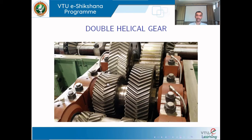A double helical gear has left-hand and right-hand teeth both inclined to the gear axis. It is used to overcome the disadvantage of the single helical gear, which produces an axial thrust. By using both right-hand and left-hand cuts, the axial forces cancel out, allowing more power transmission and noiseless operation compared to spur and single helical gears.